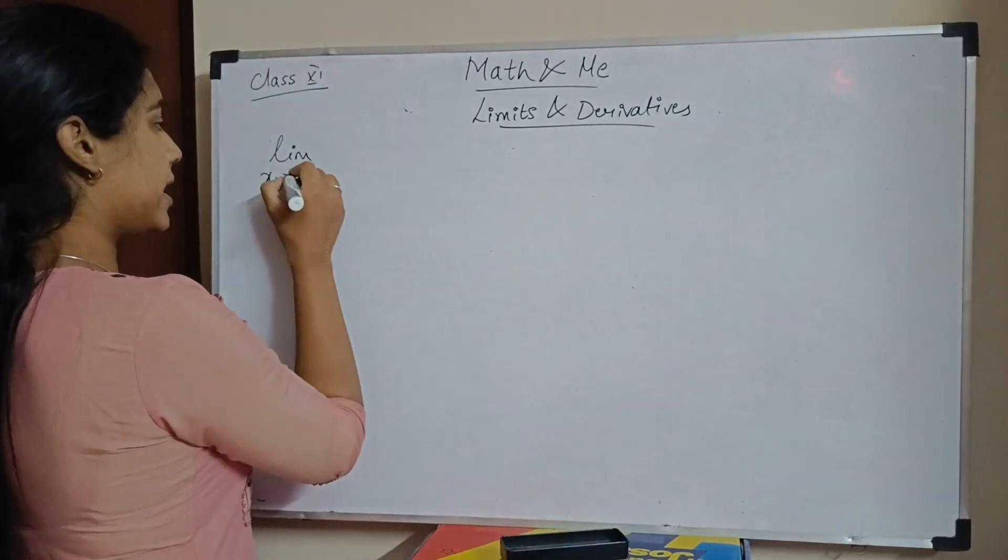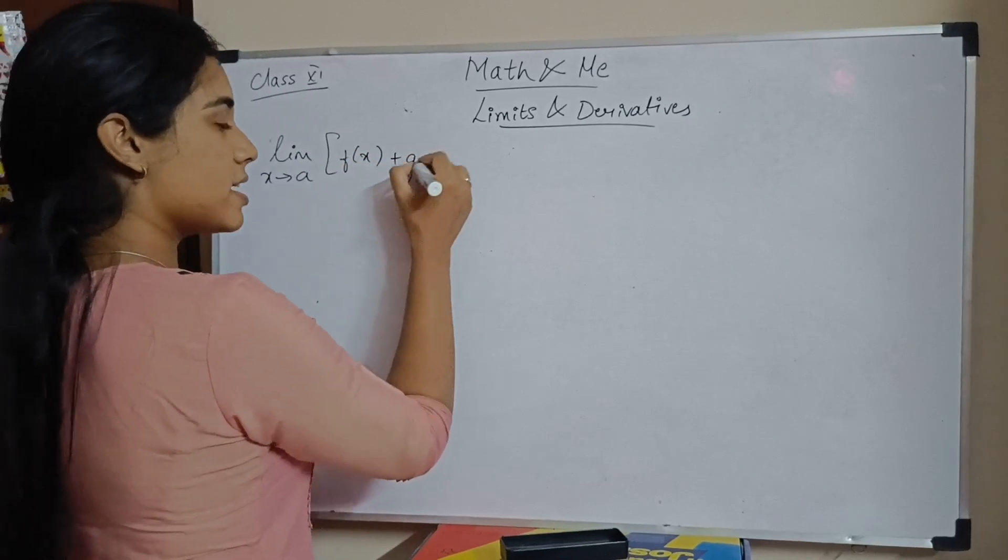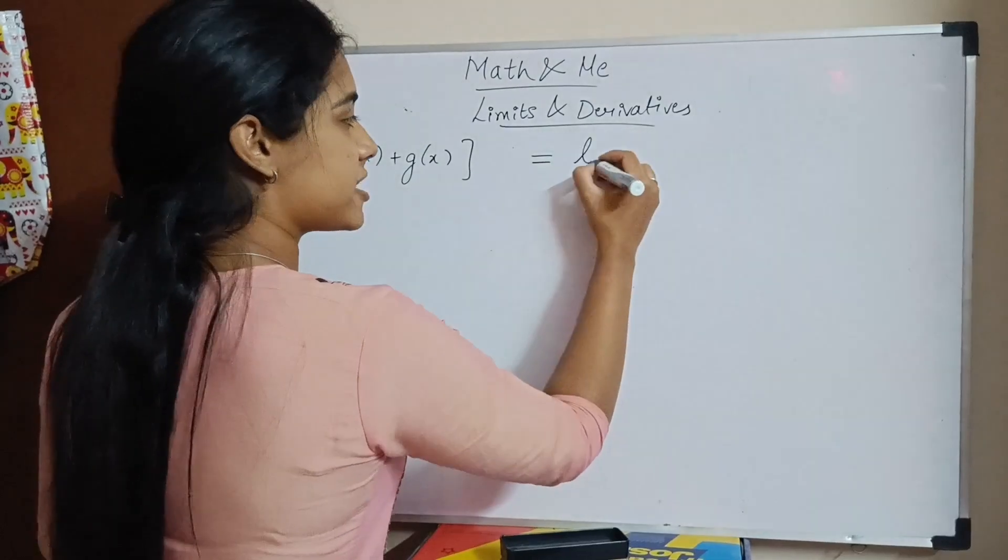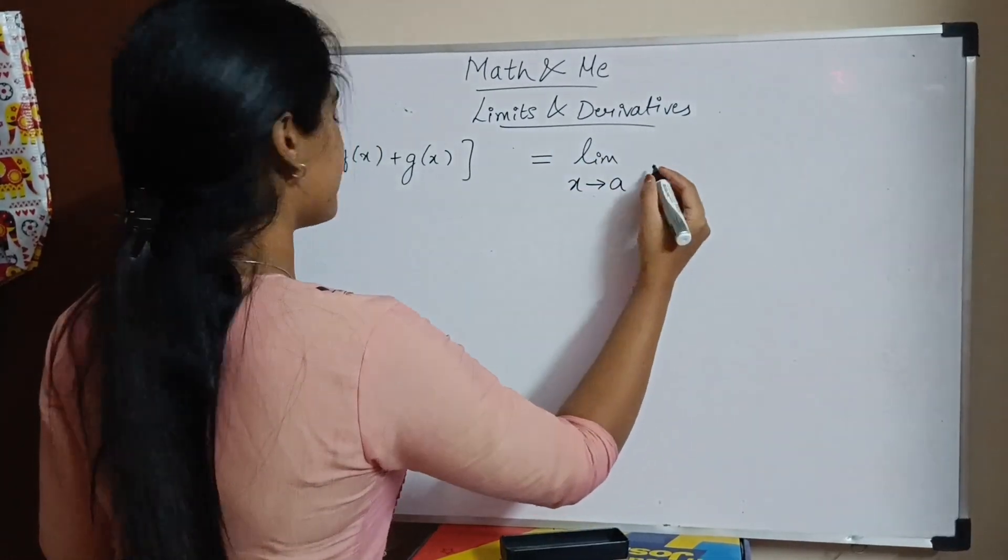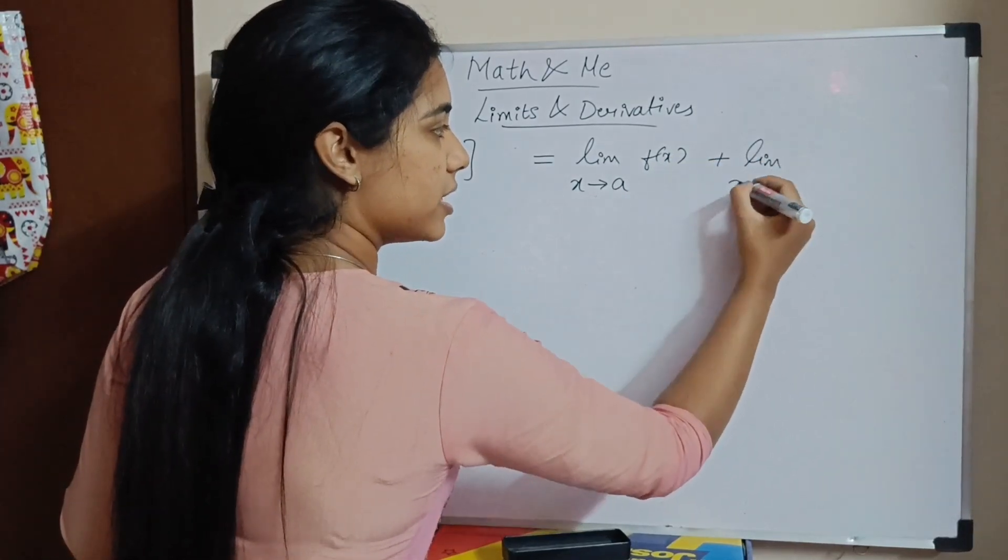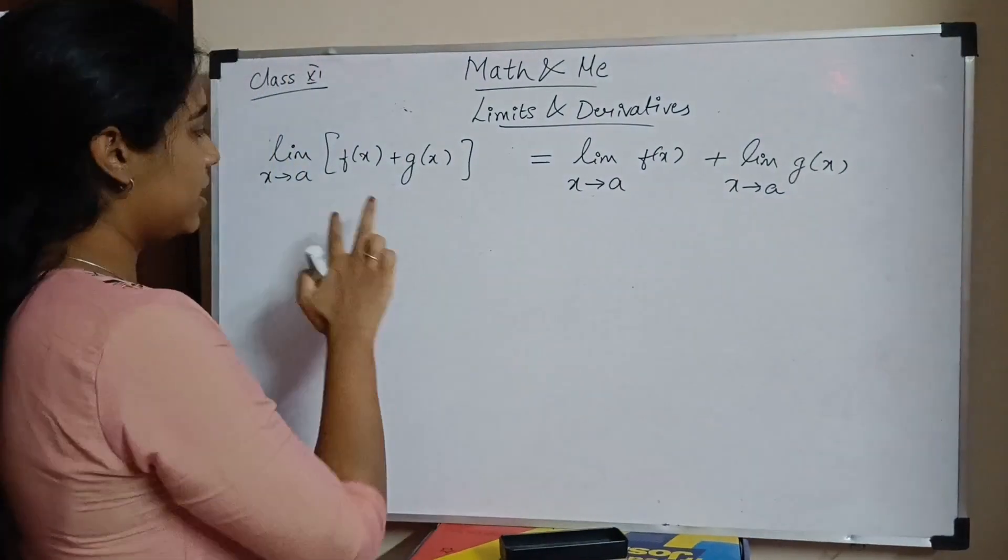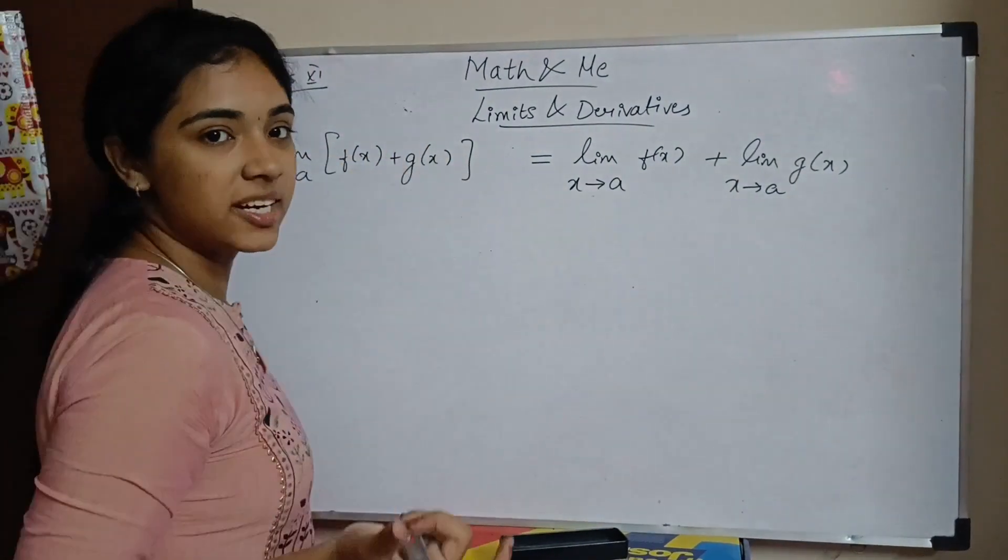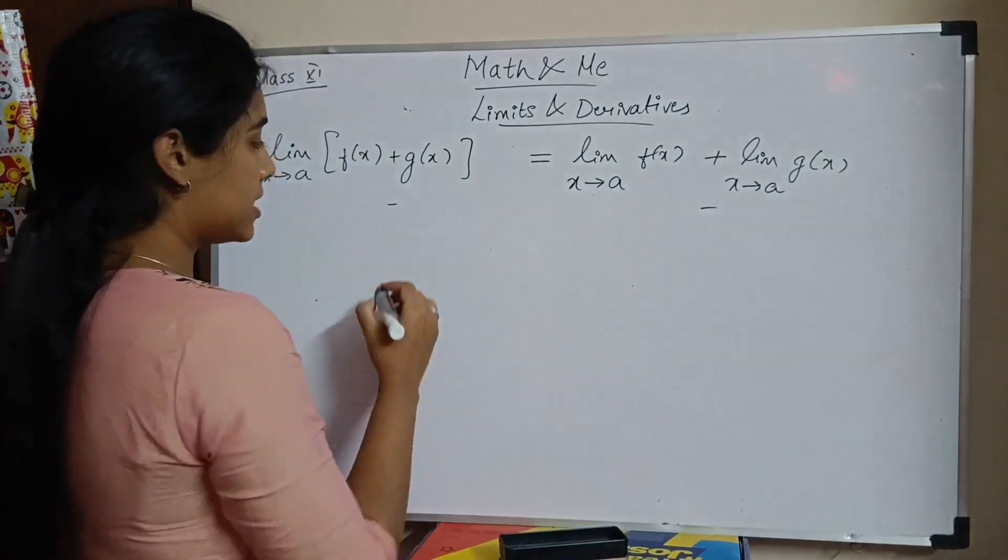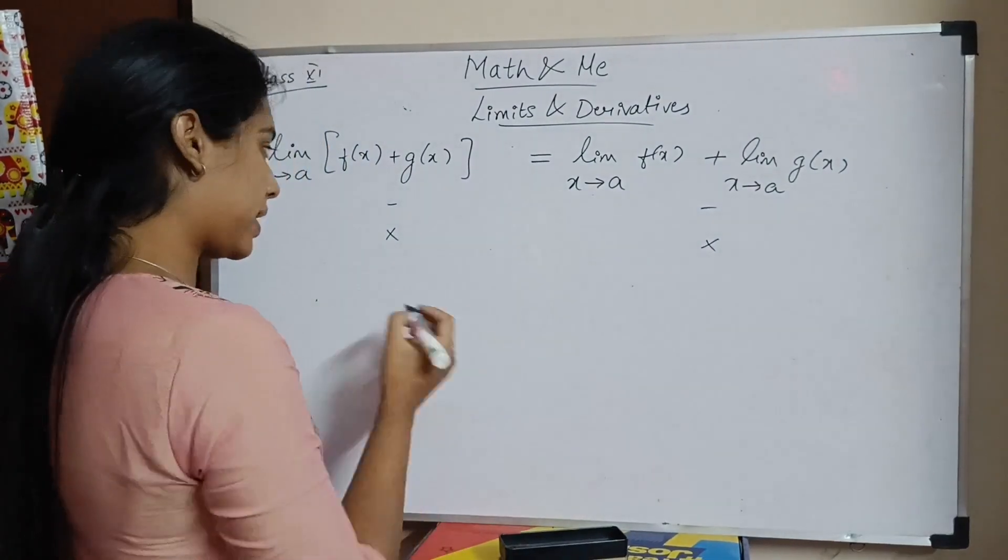We have limit x tends to a of whole bracket f of x plus g of x, you can split it. Limit x tends to a of f of x plus limit x tends to a of g of x. Same applies for negation, same applies for multiplication, same applies for division.